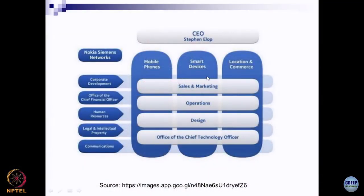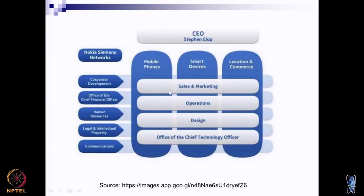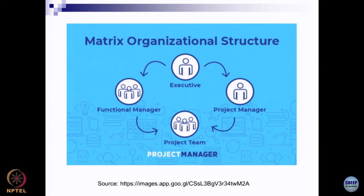Another example of the divisional form: the sales and marketing operations and the office of the chief technology officer may be common across mobile phones, smart devices, and location and commerce — this is an example of the Nokia Siemens network. You will see that people working in sales and marketing might have two bosses. They may have to report to the head of mobile phones or smart devices, and also to the corporate office of the marketing function. This is an example of a matrix organization structure.